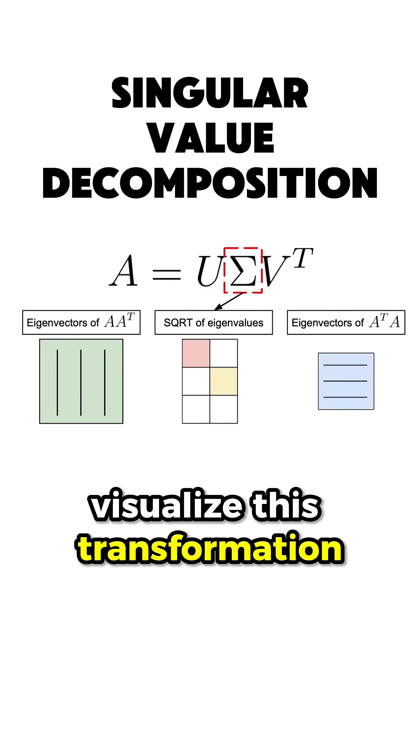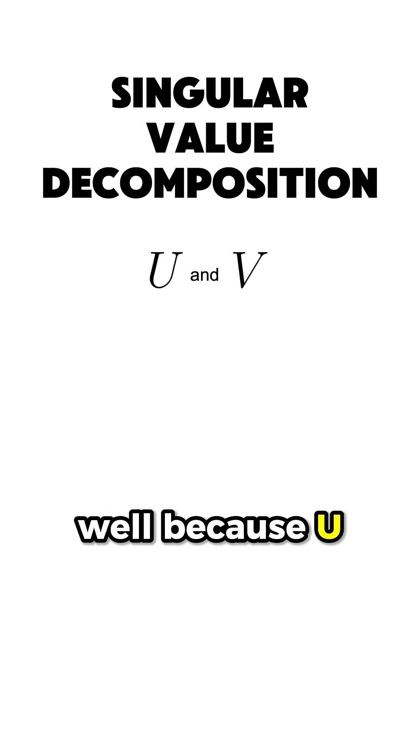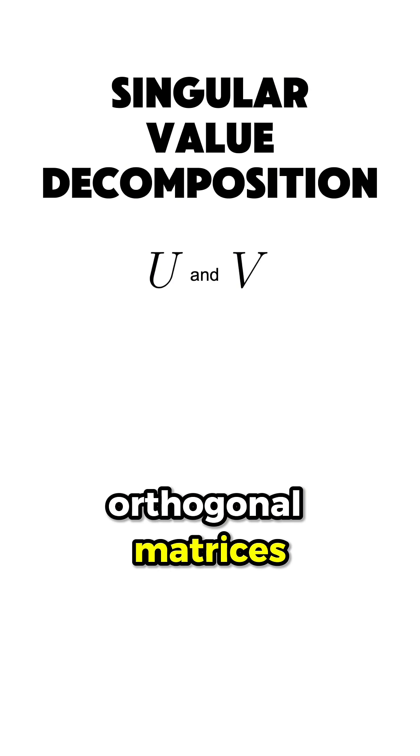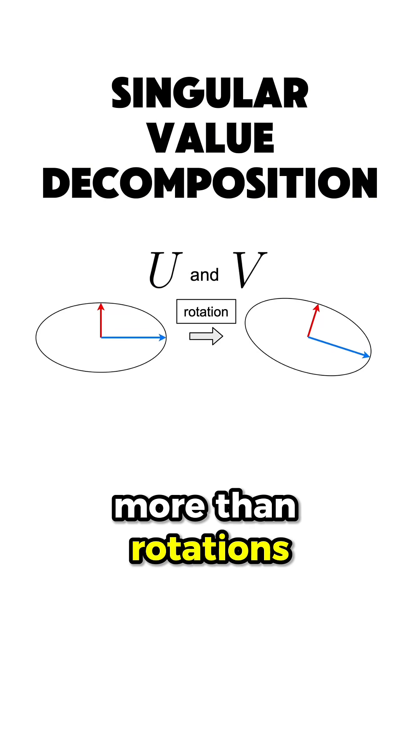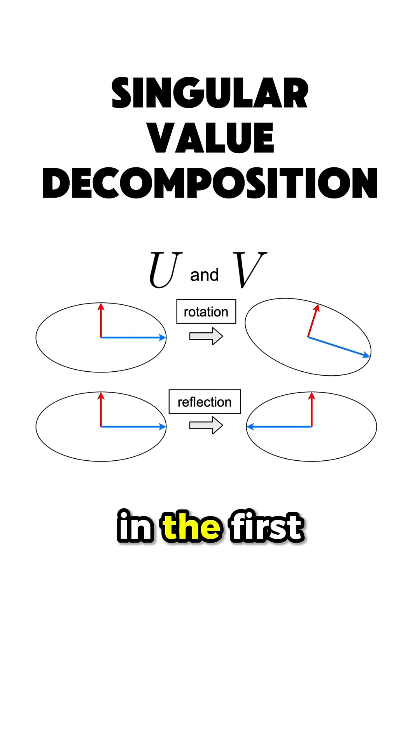How can you visualize this transformation? Well, because U and V are orthonormal matrices, they represent rotations or reflections in the first and second dimension of matrix A.